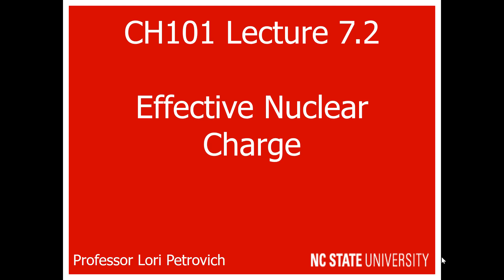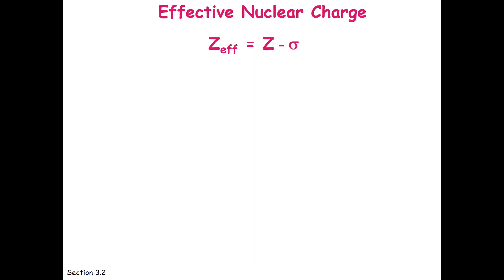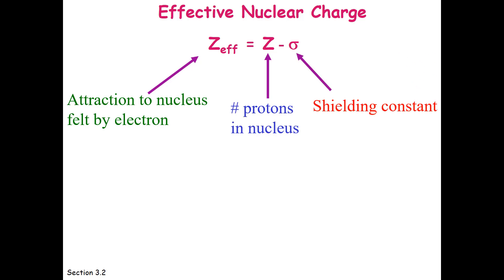The next portion of this lecture deals with effective nuclear charge. Effective nuclear charge is represented as Z subscript effective, equal to Z minus sigma. Z_eff is the attraction to the nucleus felt by an electron. Remember the nucleus is positive, the electron is negative, so there is an attraction. Z is the number of protons in the nucleus. Sigma is known as a shielding constant. Inner electrons shield more than outer shell electrons.